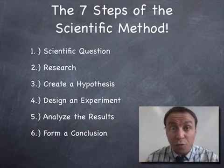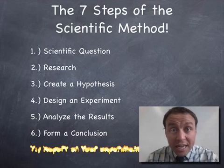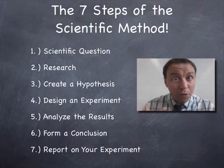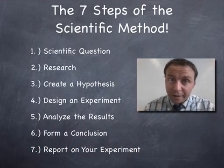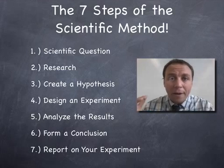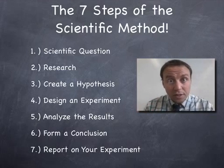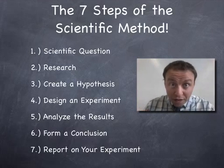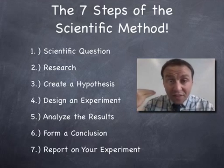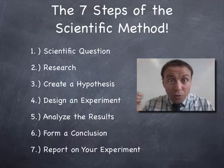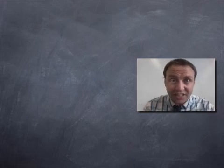Step number six is going to be to form a conclusion. And then finally, arguably one of the most important steps, reporting on your experiment. That means telling people about it, sharing your results with other scientists. So there's the seven steps, that's their names, that's the order that you're going to perform your scientific method in as you start doing it again and again and again in class.